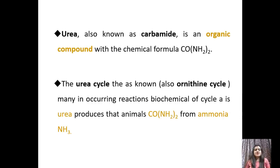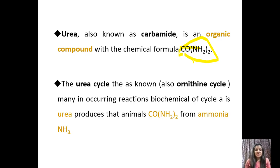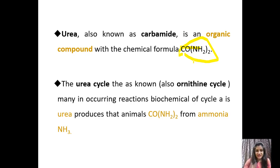Urea is also known as carbamide. Carbamide is an organic compound with a chemical formula CO(NH2)2. The urea cycle is also known as the ornithine cycle, which we will see in these steps. It is the biochemical cycle by which animals produce urea from ammonia (NH3).